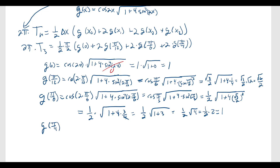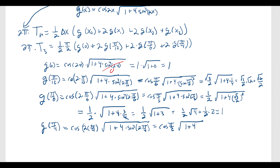Finally, g(pi over 4): cosine of 2 times pi over 4 is cosine of pi over 2, which is 0. So it's 0 times the square root of 1 plus 4 times sine squared of pi over 2. Sine of pi over 2 is 1, squared is 1, but it's irrelevant because the 0 makes the whole thing 0. So g(pi over 4) equals 0.